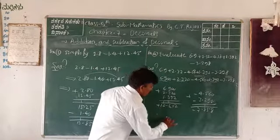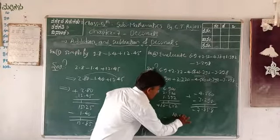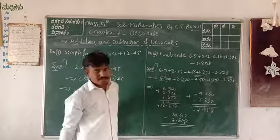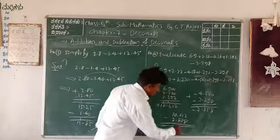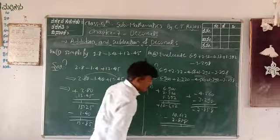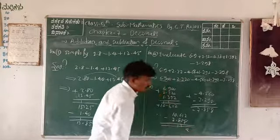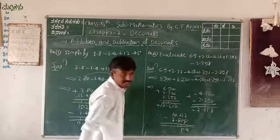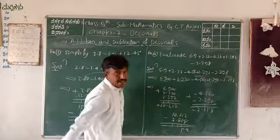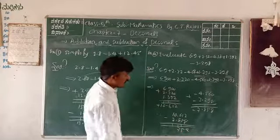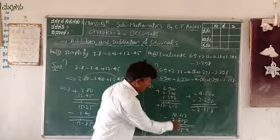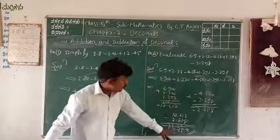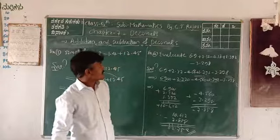Adding negatives: 0+8=8; 6+9=15, carry 1; 5+3+1=9 — wait: 5+2=7, 7+1=8; 4+3=7. So negative sum is -7.858. Now subtract: 10.612 minus 7.858. Working with borrowing: 2-8 impossible borrow 12-8=4; 1-6 borrow 11-6=5; 6-9 borrow 16-9=7; 0-8 borrow 10-8=2; 1-1=0. Answer is 02.754.